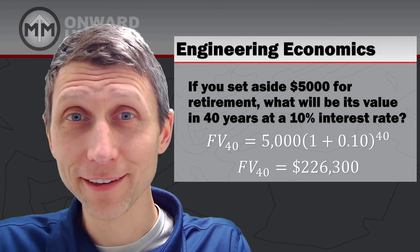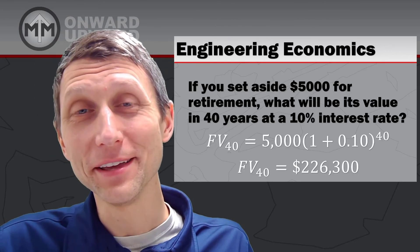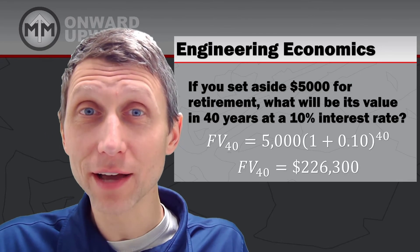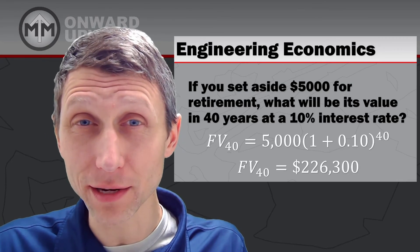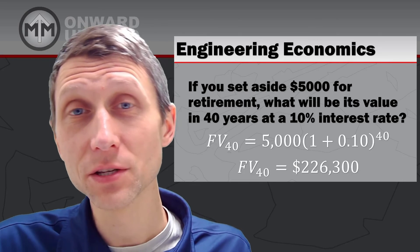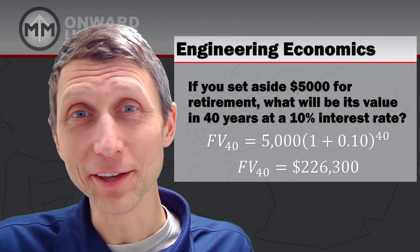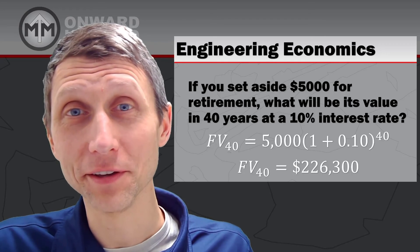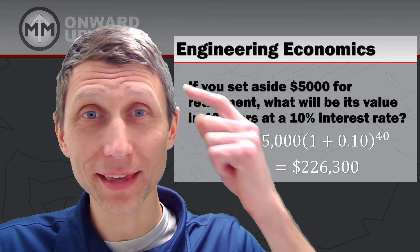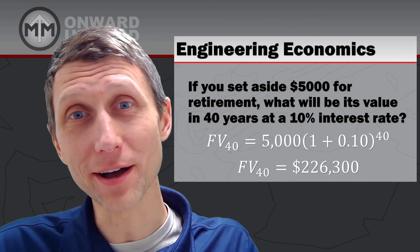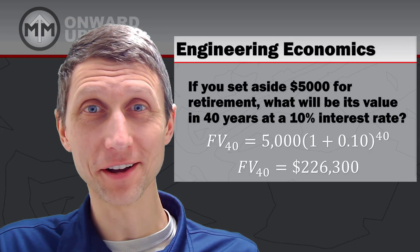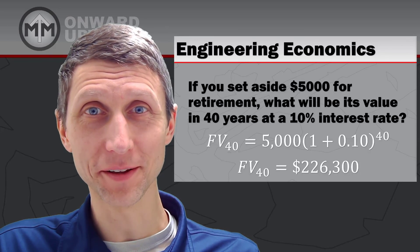If you started saving with only 20 years left to retirement, you'd end up with about $30,000 — compared to nearly a quarter million with 40 years. That extra 20 years of compounding interest makes an enormous difference. The lesson: start saving early, and hopefully retire early too. Pass that FE exam, think 'show me the money, boss,' and keep working hard — onward and upward!